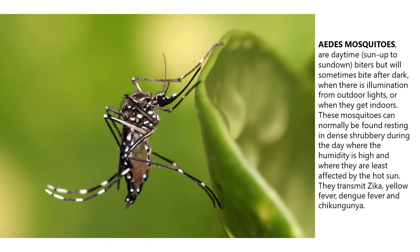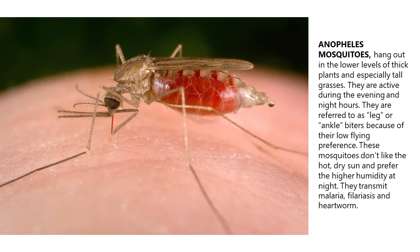Aedes mosquitoes transmit Zika, yellow fever, dengue fever, and chikungunya. Anopheles mosquitoes hang out in the lower levels of thick plants and especially tall grasses. They are active during the evening and night hours. They are referred to as leg or ankle biters because of their low flying preference. These mosquitoes don't like the hot, dry sun and prefer the higher humidity at night. They transmit malaria, filariasis, and heartworm.